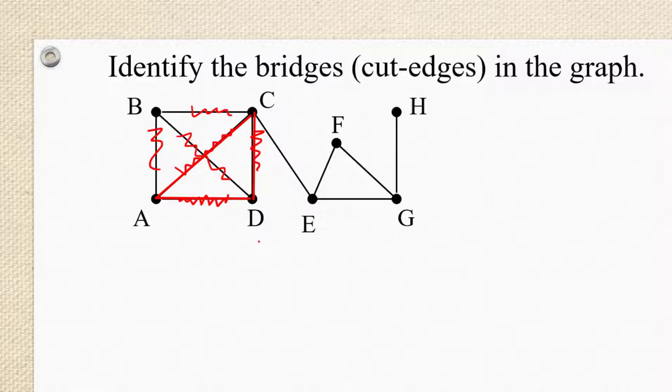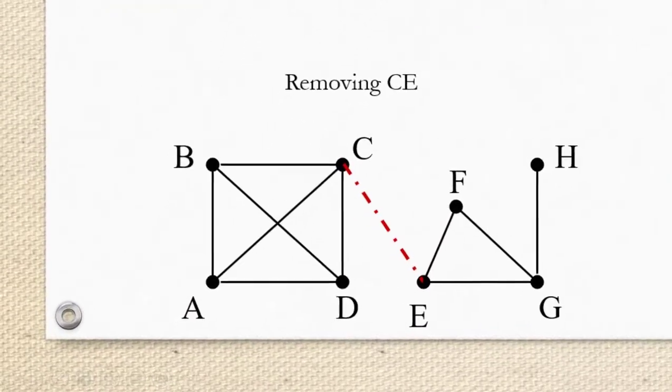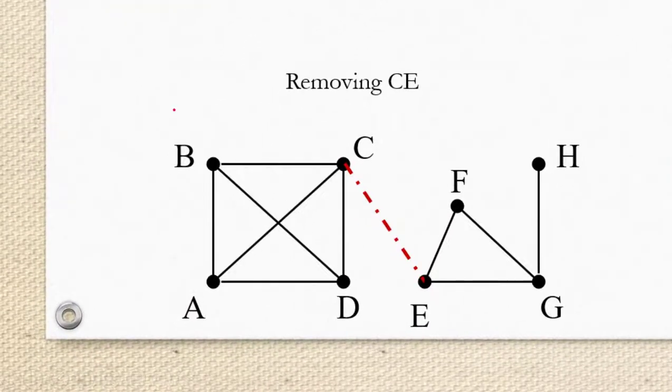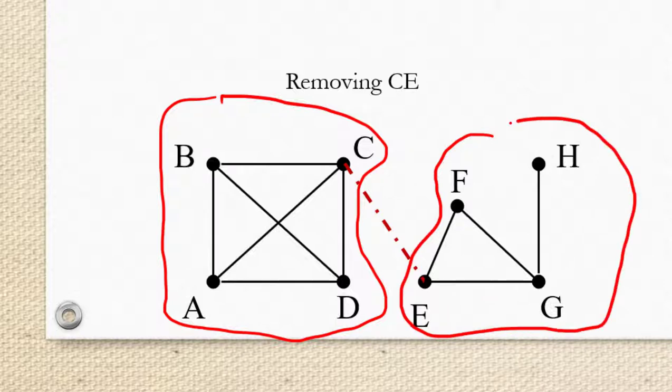We also have over on the right a triangle E, F, G. None of these edges that are part of that triangle can be bridges. And so what we're left to consider are the edges C, E, and H, G. So if you imagine removing C, E from the graph, you can see that we do get two distinct components. The component A, B, C, D is separated completely from the component E, F, G, H.